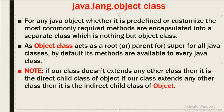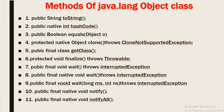The methods of java.lang.Object class — there are 11 very important methods we must know. The first is public String toString(). Next is the hashCode() method. Then public boolean equals(), and protected native Object clone(). Also included are getClass() and finalize() methods.